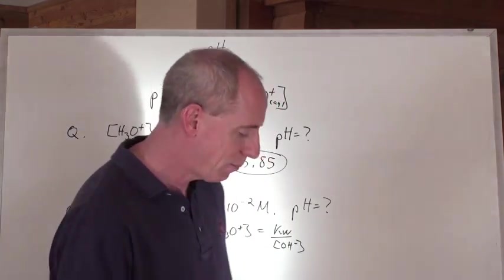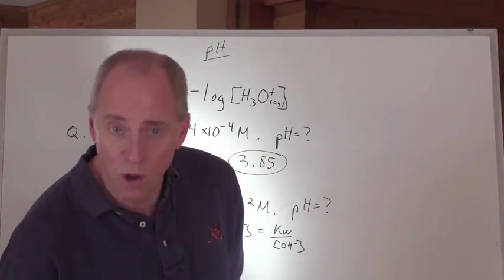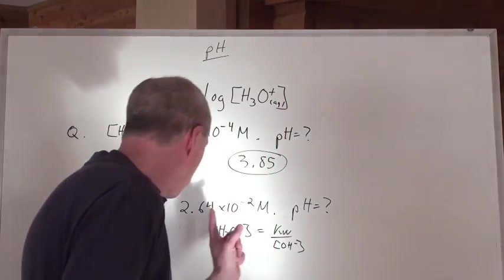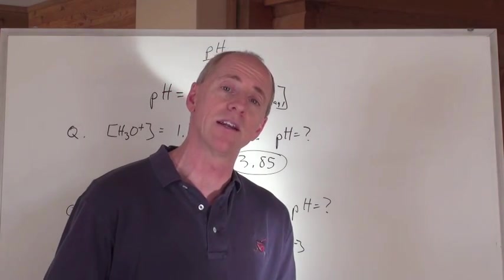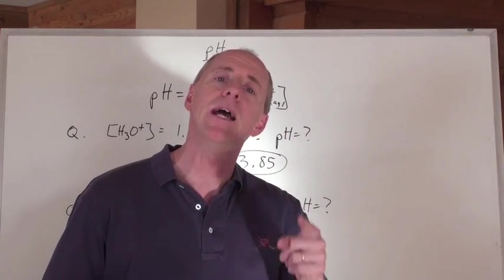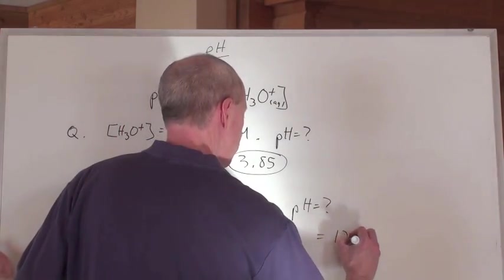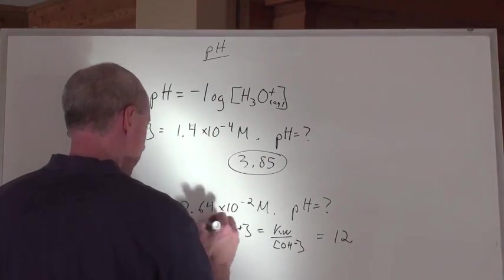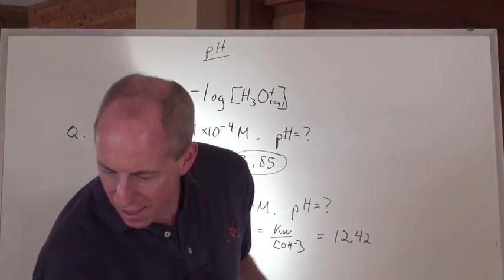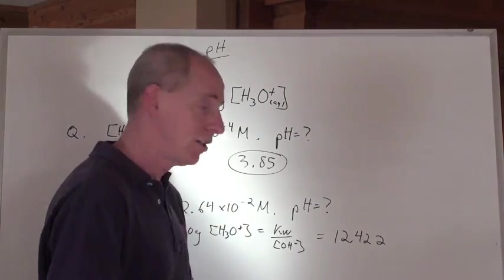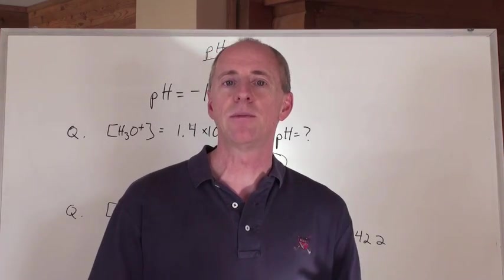That pH is going to be — if it's two significant digits here and three significant digits in the Kw (1.00 times 10 to the negative 14), you keep two numbers after the decimal in your pH. When you take the negative log of that, you get 12.42. And that's a base, just like we predicted. Now let's do some calculations involving some really standard types of solutions.